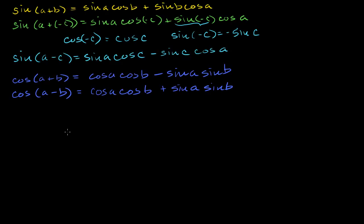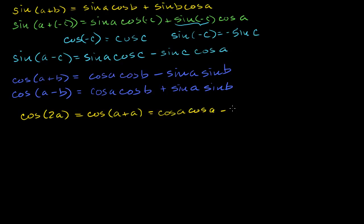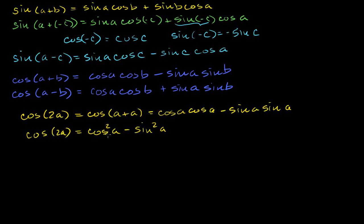What if I wanted an identity for the cosine of 2a? The cosine of 2a is just the cosine of a plus a. Using the cosine addition formula with b equal to a, this equals cosine of a times cosine of a minus sine of a times sine of a, which I can rewrite as cosine squared of a minus sine squared of a. So cosine of 2a equals cosine squared of a minus sine squared of a.